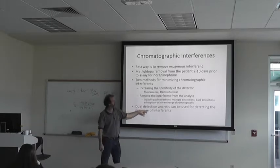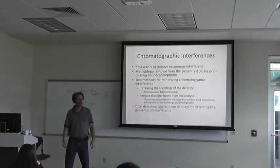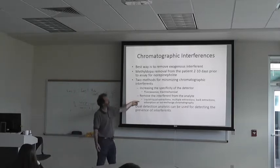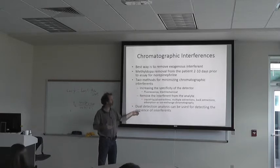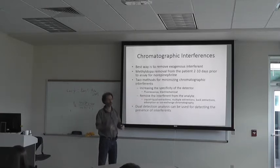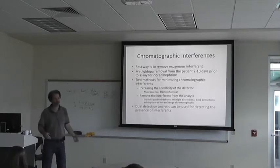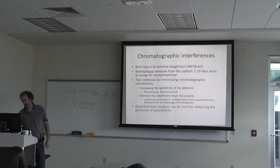A dual detector analysis can be used for detecting the presence of interference. You can use absorbance and fluorescence, or absorbance and electrochemical — two different wavelengths — because different compounds may have different absorbance spectra that help you differentiate between the interferent and the analyte you're interested in.